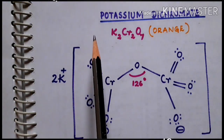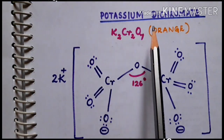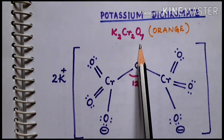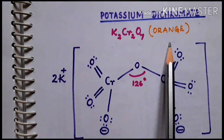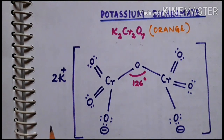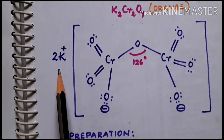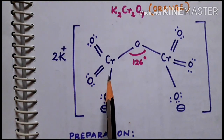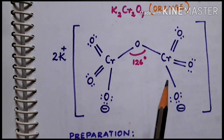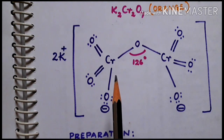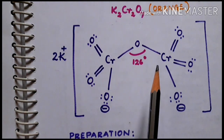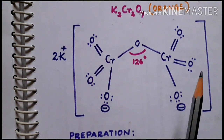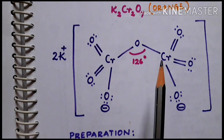Today we will be learning the preparation of potassium dichromate. Its formula is K2Cr2O7. It is an orange colored crystal which exists as an ionic compound with 2 K+ ions surrounded by Cr2O7 2-. This structure has an angle of 126 degrees, where two tetrahedra are joined through one corner.